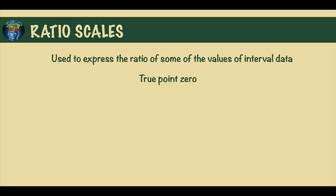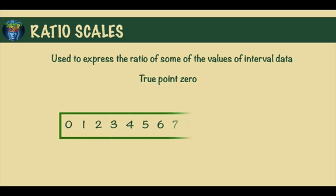And it also means that you cannot have a negative point on a ratio scale. So for example measuring something with a ruler would give you a measure in a ratio scale. Zero literally means no length.